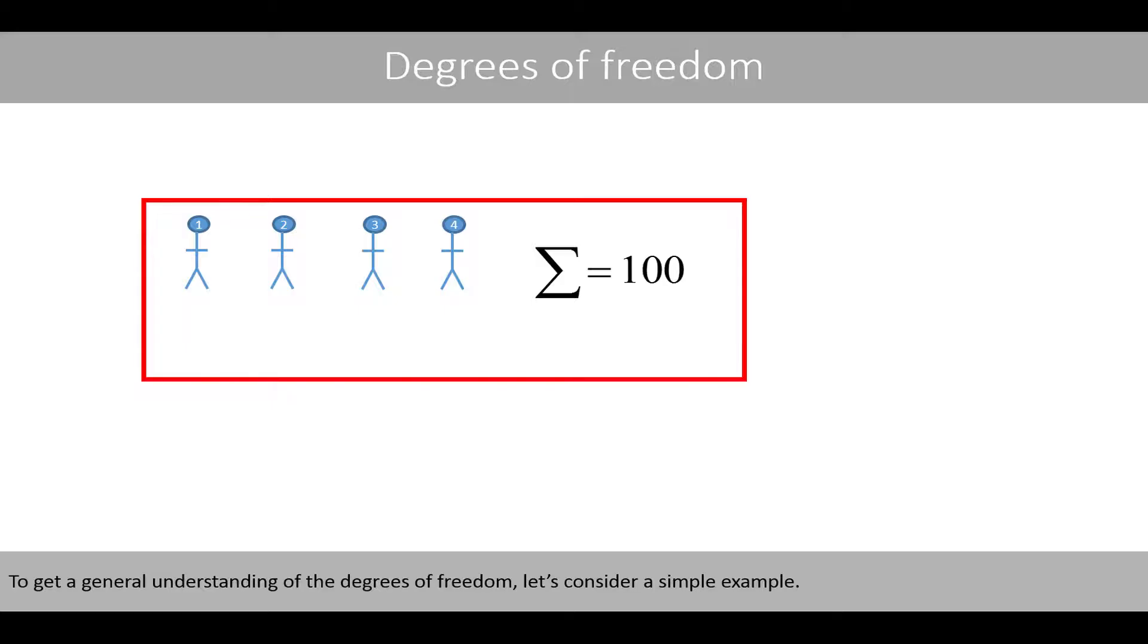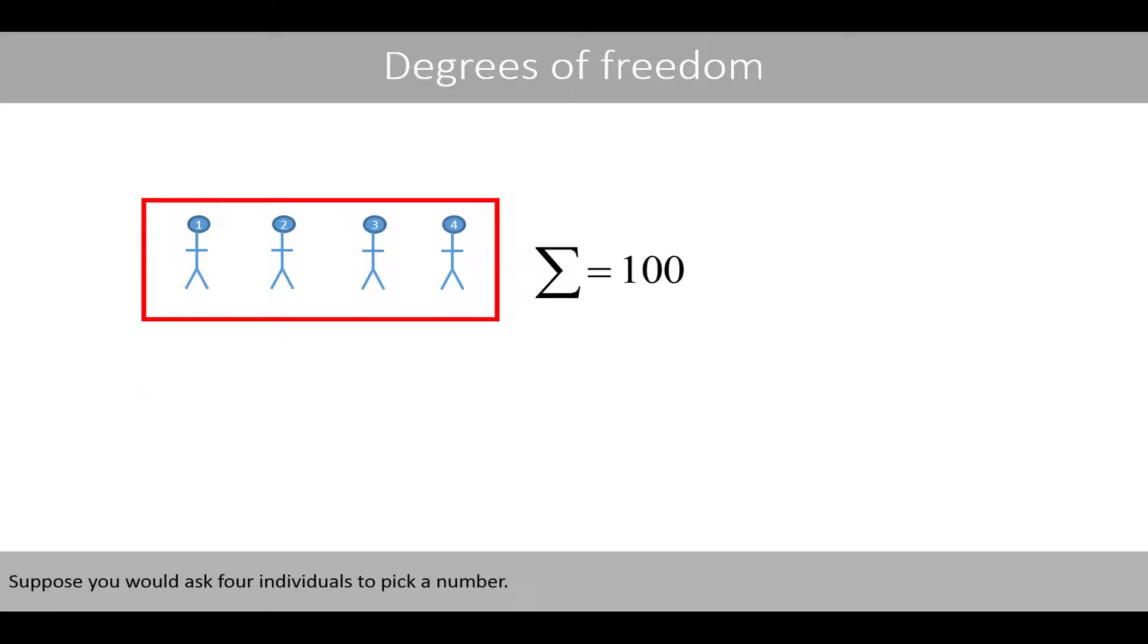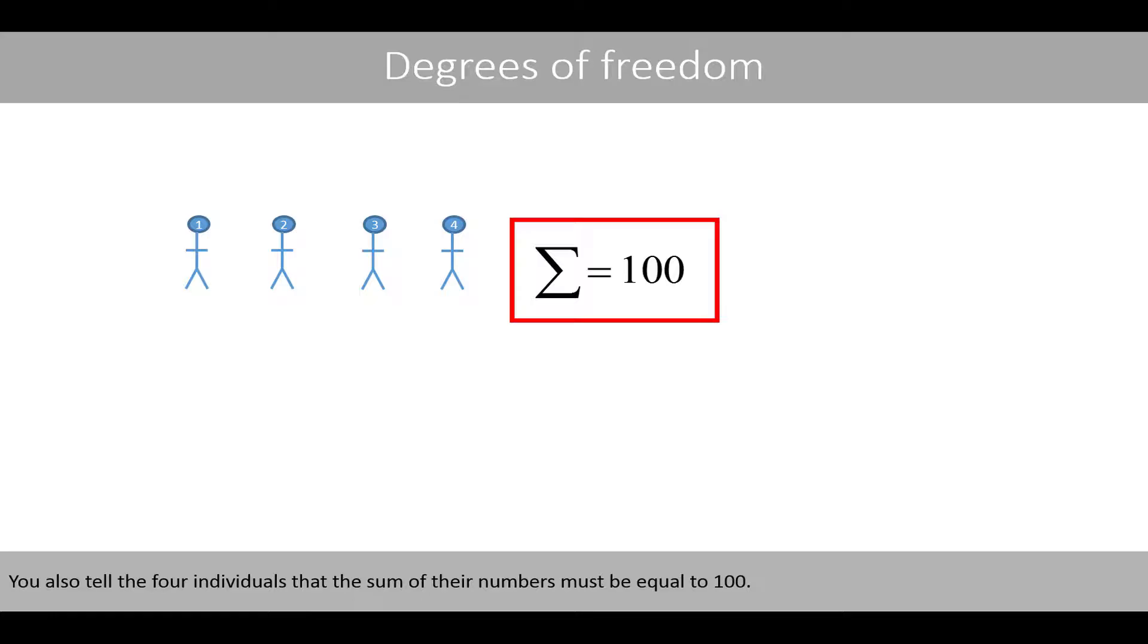To get a general understanding of the degrees of freedom, let's consider a simple example. Suppose you would ask four individuals to pick a number. You also tell the four individuals that the sum of their numbers must be equal to 100.